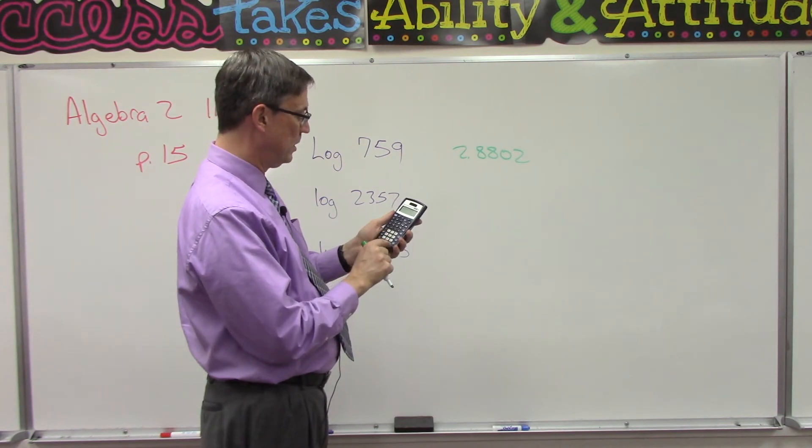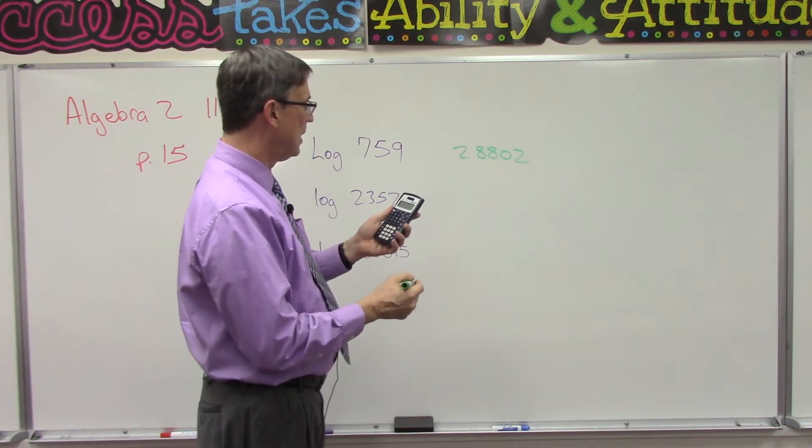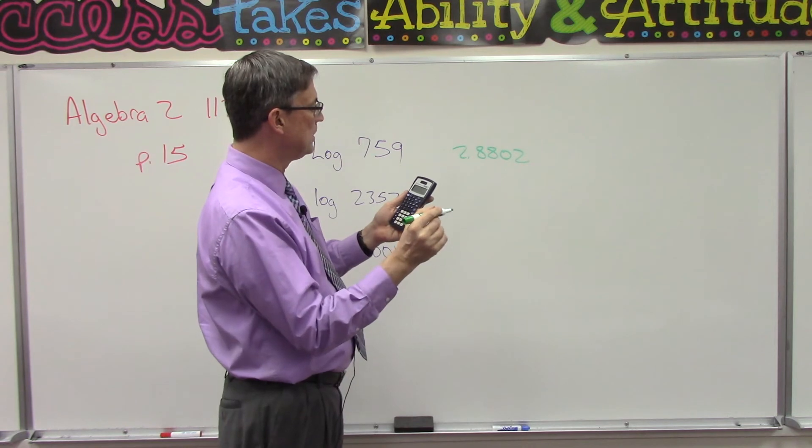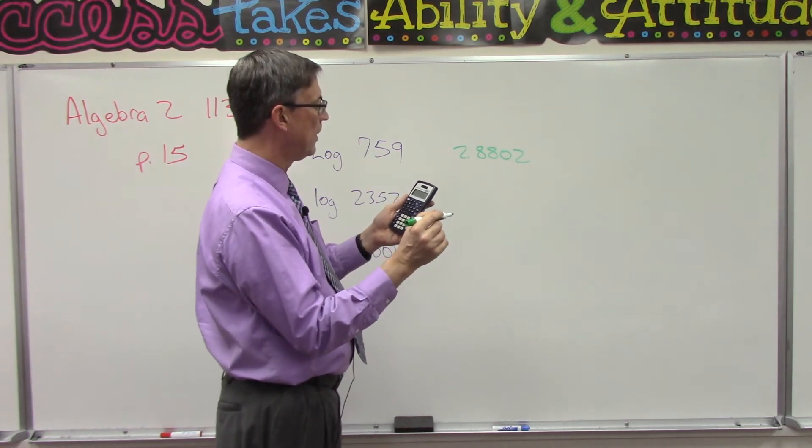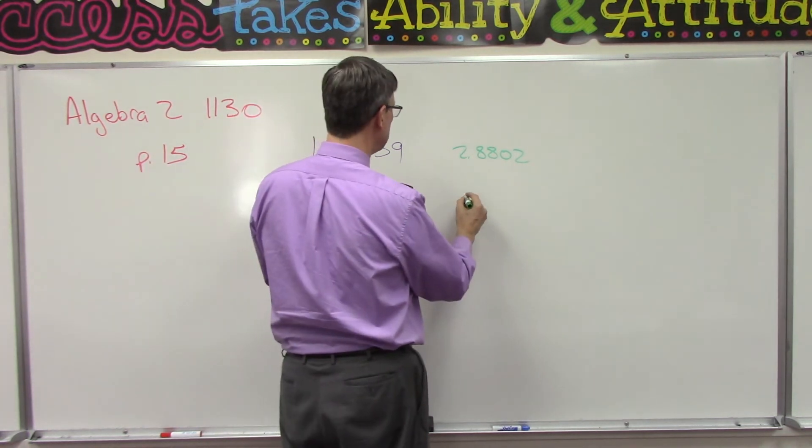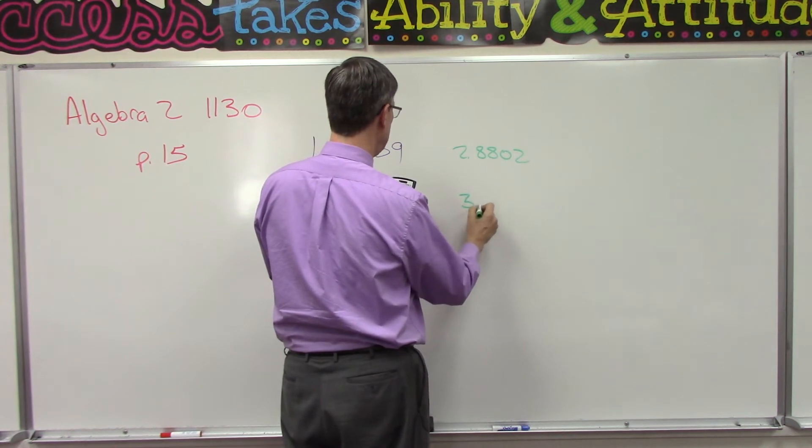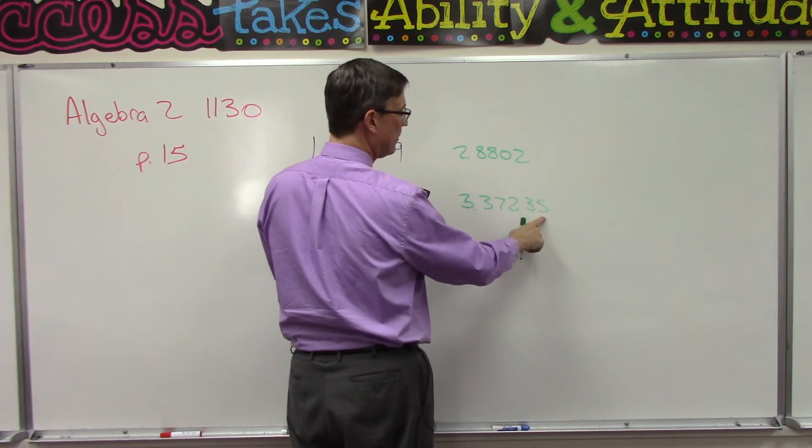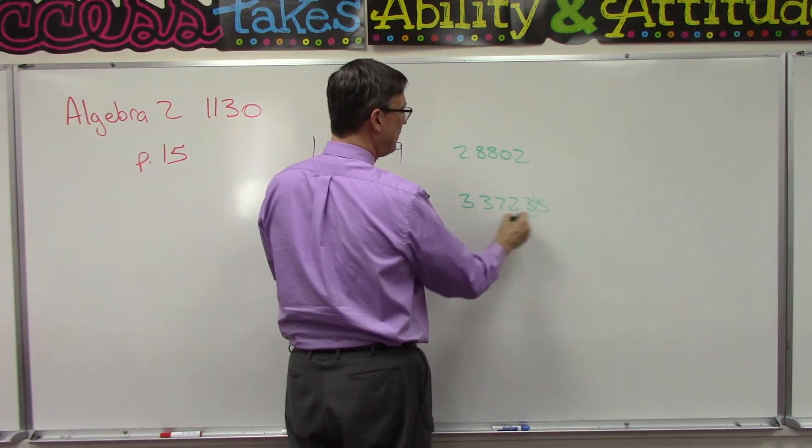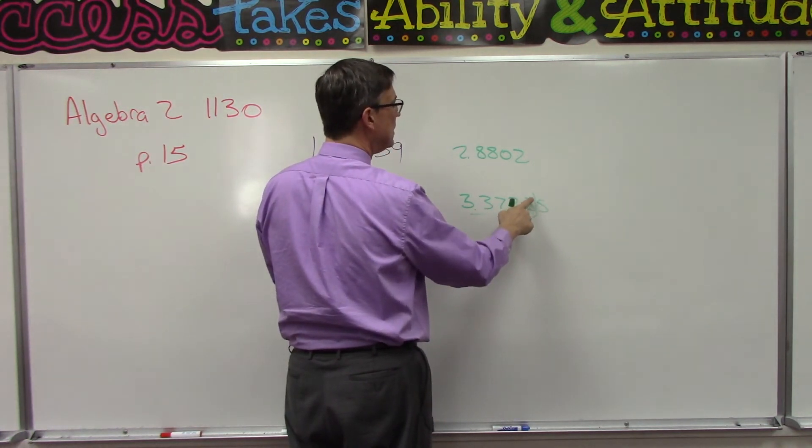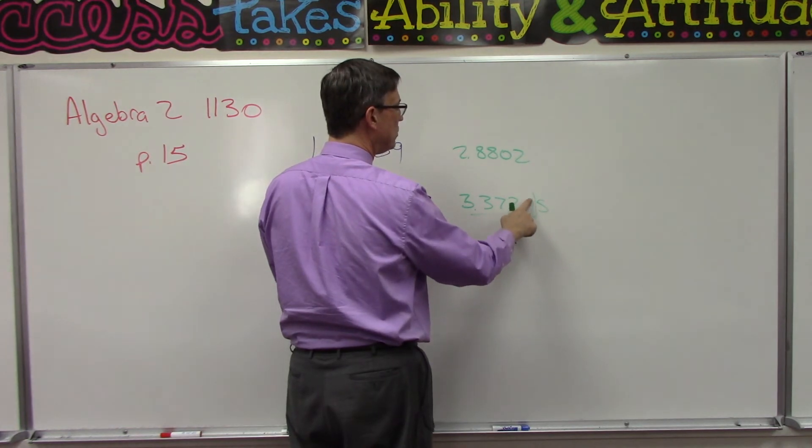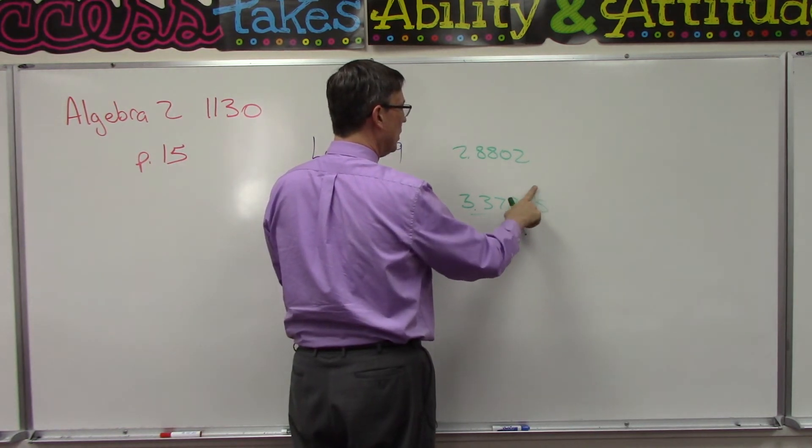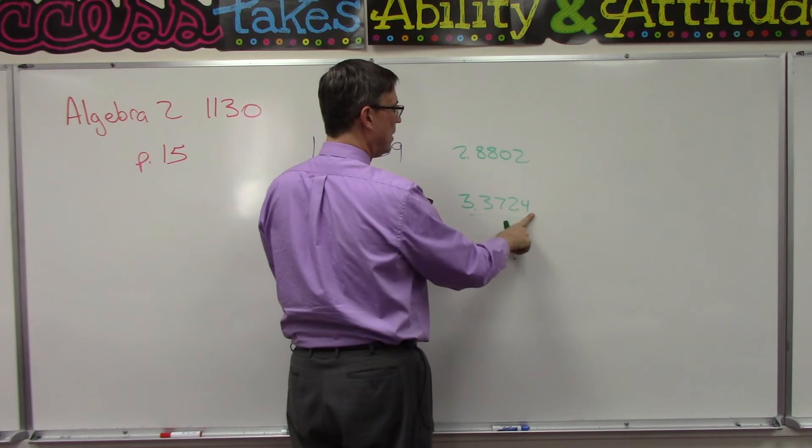Log 2357, hit enter, and I get a long number: 3.372359583. Again, four decimal places, so 3.3723. The next digit is 5, so remember I've got to stop here, so that means this will round up to 4, and then we can just get rid of the 5.